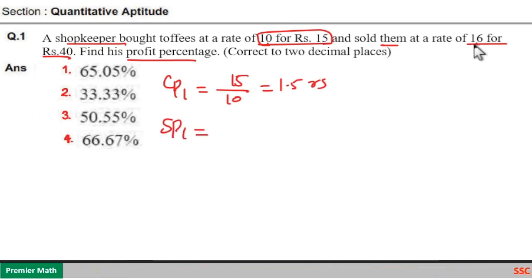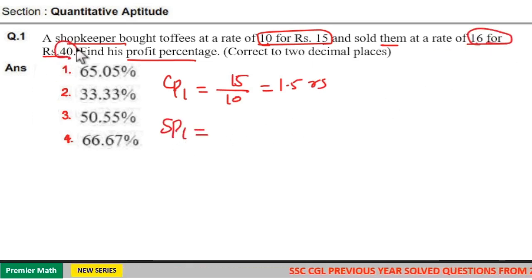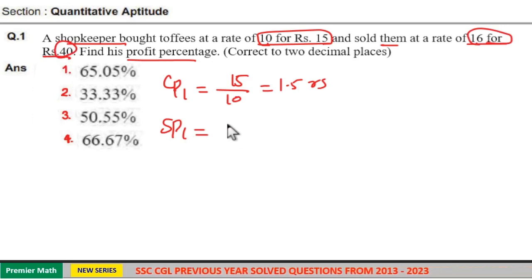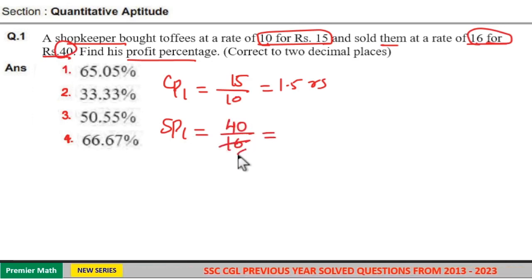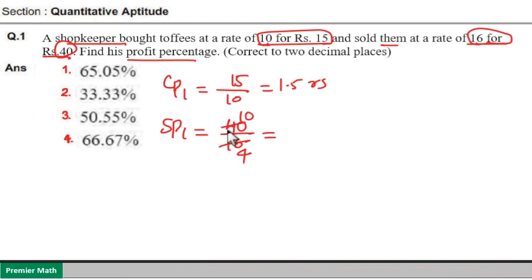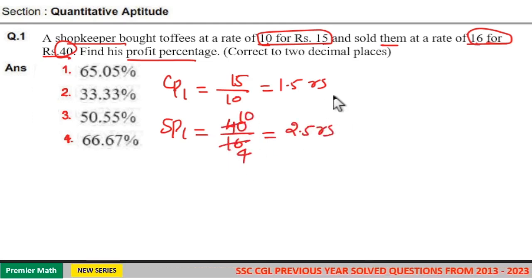He sold 16 toffees for rupees 14, so the sell price of 1 toffee is equal to 14 divided by 16. 4 goes 4 times in 60, 4 goes 10 times in 40, so 10 by 4 is equal to 2.5 rupees.